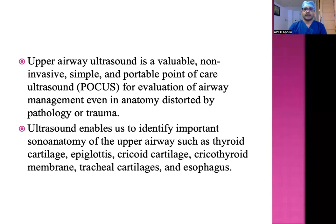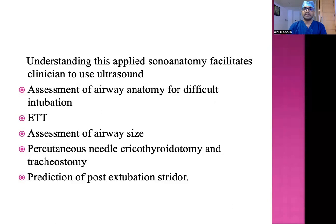Ultrasound enables us to identify important sonoanatomy of the upper airway, such as thyroid cartilage, epiglottis, cricoid cartilage, cricothyroid membrane, tracheal cartilages, and esophagus. Understanding this applied sonoanatomy facilitates the clinician to use ultrasound for assessment of airway anatomy for difficult intubations, endotracheal tube placement position, assessment of airway size especially in pediatric patients, percutaneous needle cricothyroidotomy, tracheostomy procedures, and prediction of post-extubation stridor.